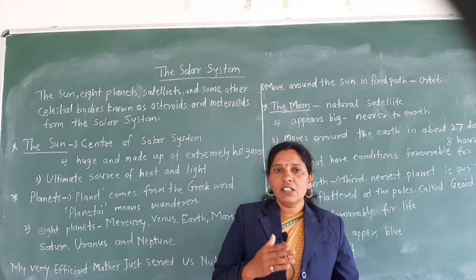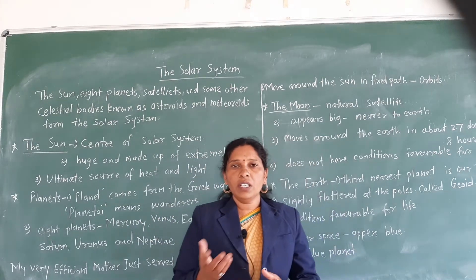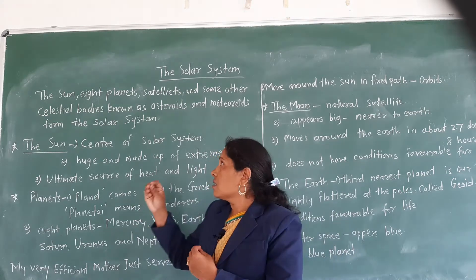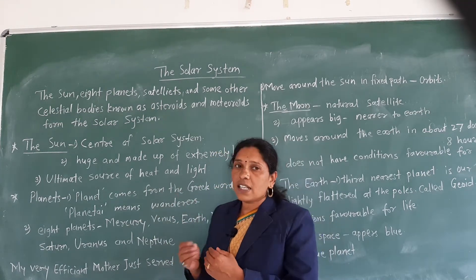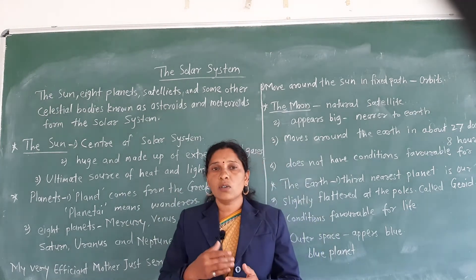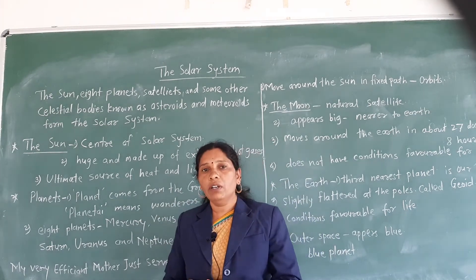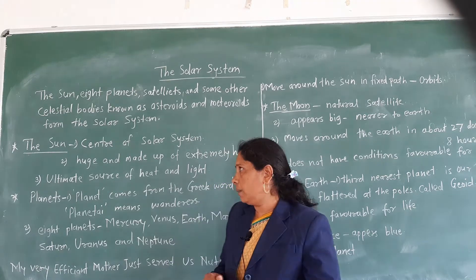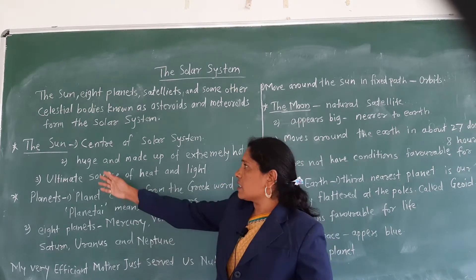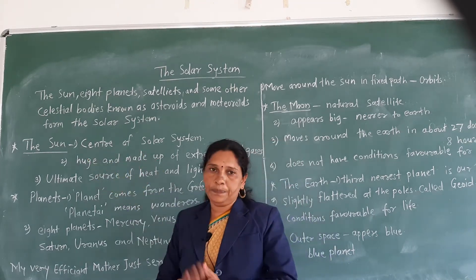Now we will see one by one which stars, planets, and satellites are there in our solar system. One by one we will take information about them. The first is the sun.